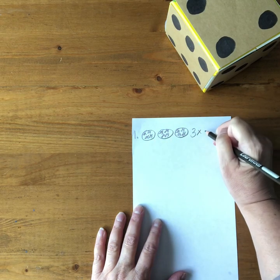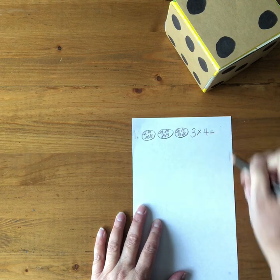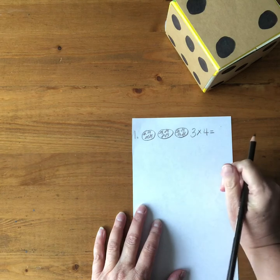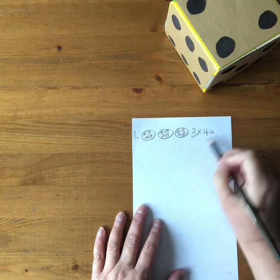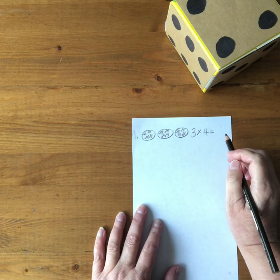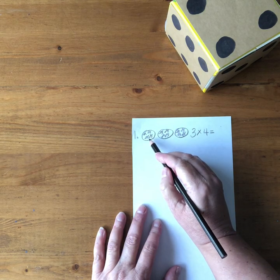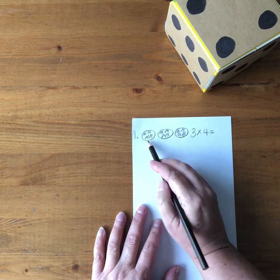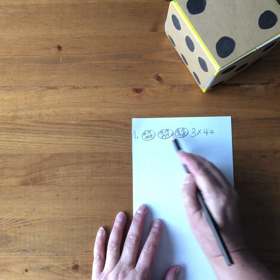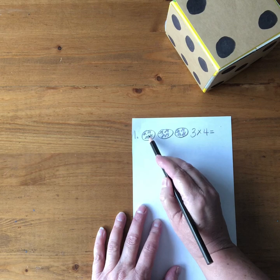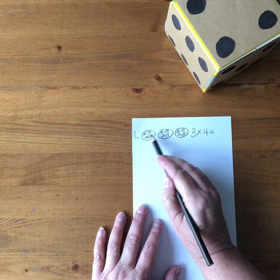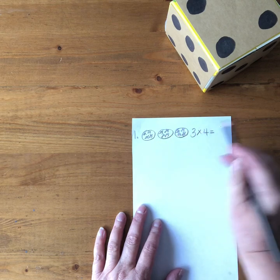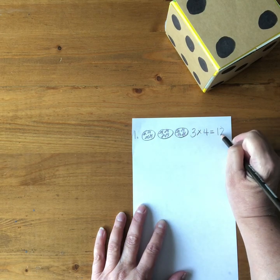And then multiply and then the second factor is the number of stars in each circle so that's four stars in each circle and then I need to calculate the product which is another word for answer or what happens when you multiply those two numbers together and so I could count up all the stars or if I could count by fours I could count four eight twelve or I could decompose the four into two twos and count by twos two four six eight ten twelve and then I write down the product.